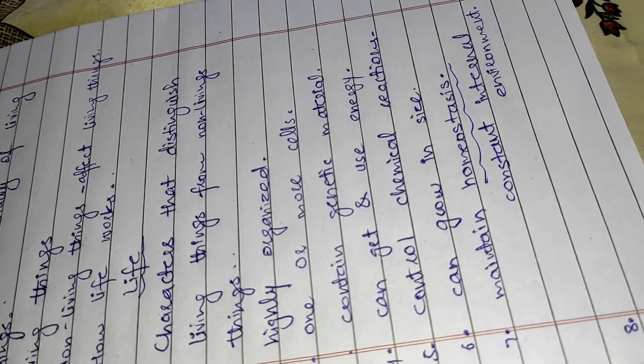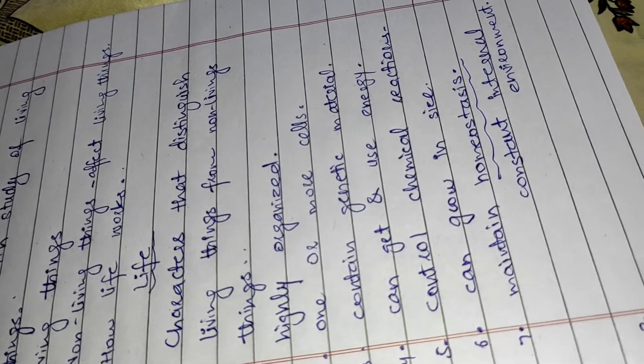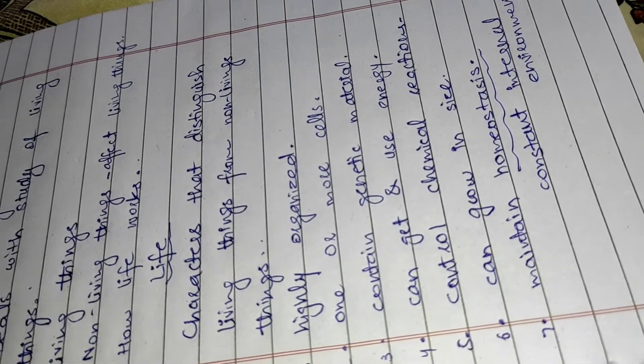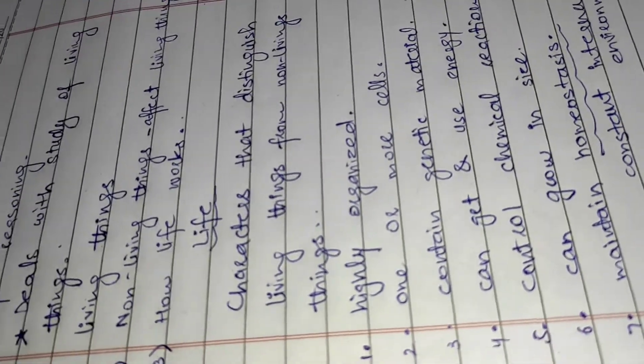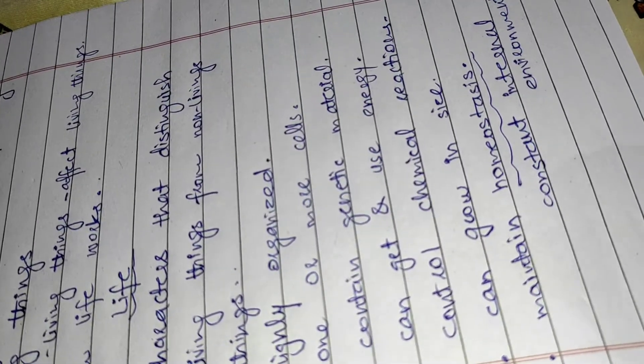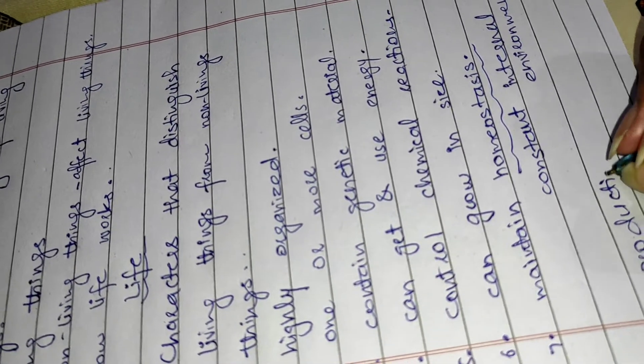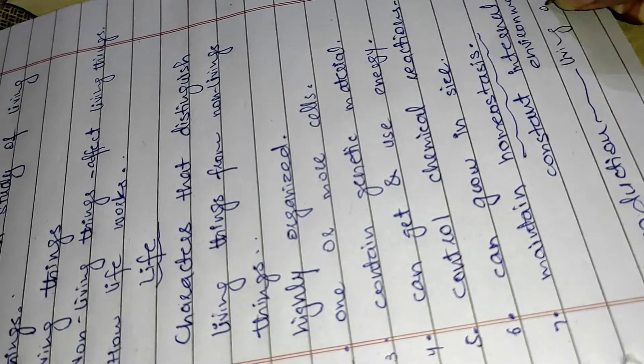When the fluctuations caused in external environment force the body, the body temperature also changes. But if there are changes in external environment, the body is constant. This is known as homeostasis. Now, the next point is that they can reproduce. Reproduction. This is the main point of living organisms.